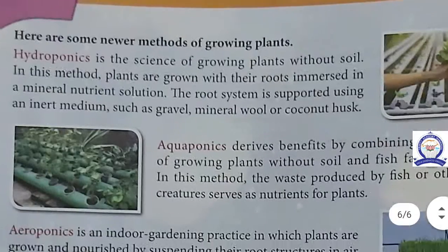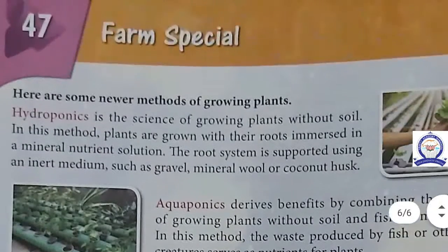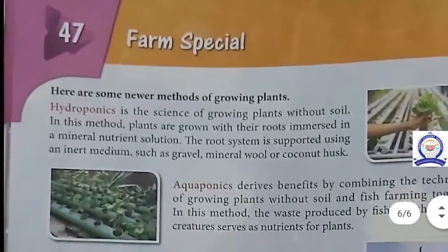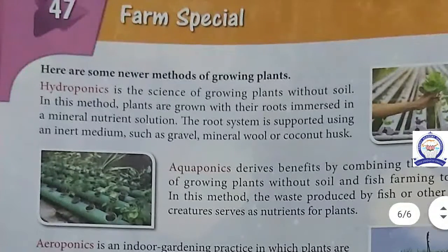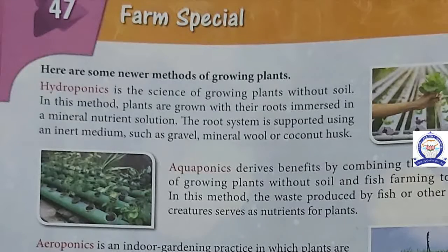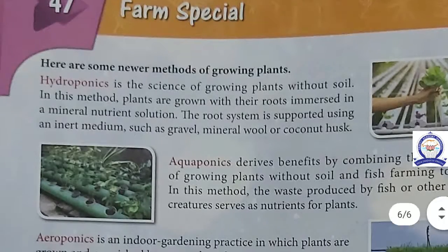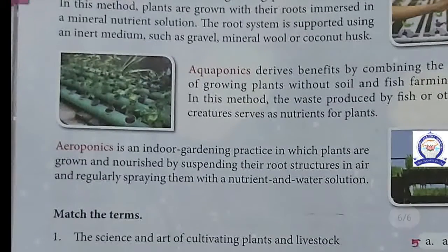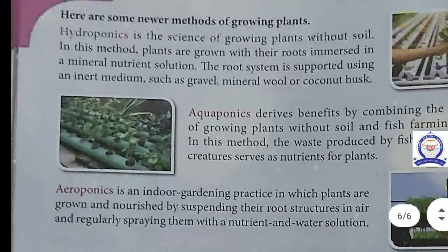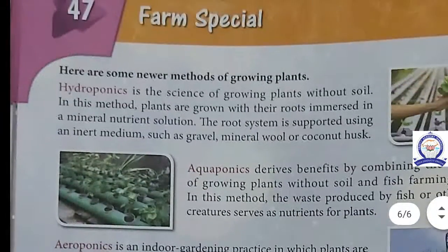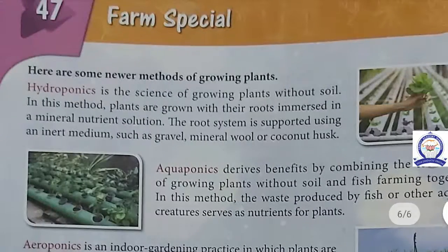The next task is Farm Special — special methods of farming used in planting new crops. The first one is hydroponics, the second is aquaponics, and the third is aeroponics. These are special modern farming techniques.